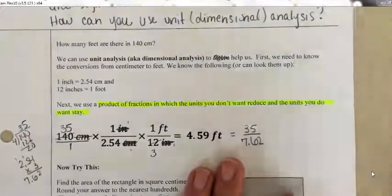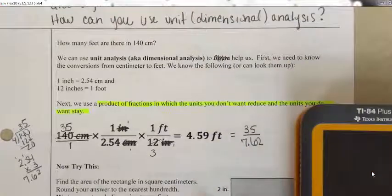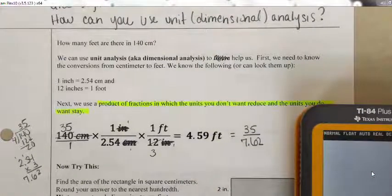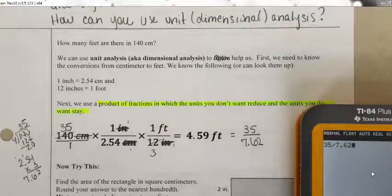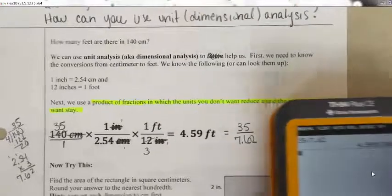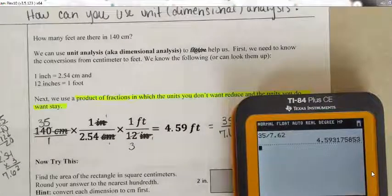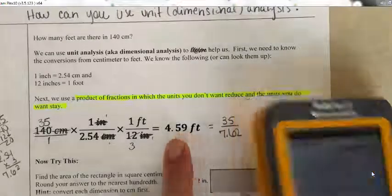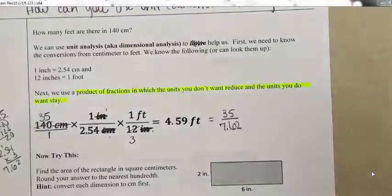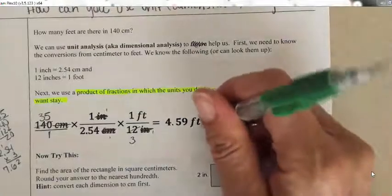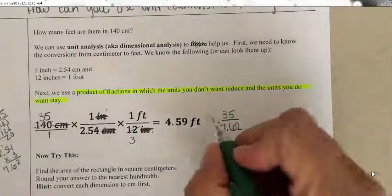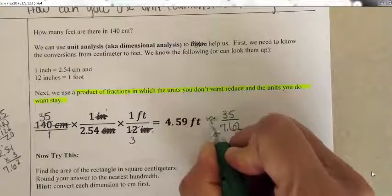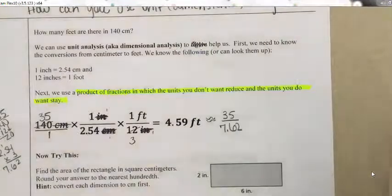That gives us a decimal, so in my calculator I'll do 35 divided by 7.62. That gives me approximately 4.593175853. It looks like the answer rounds to the nearest hundredth, so I should say approximately — I'll use little squiggly lines like equal signs to show it's an approximation.